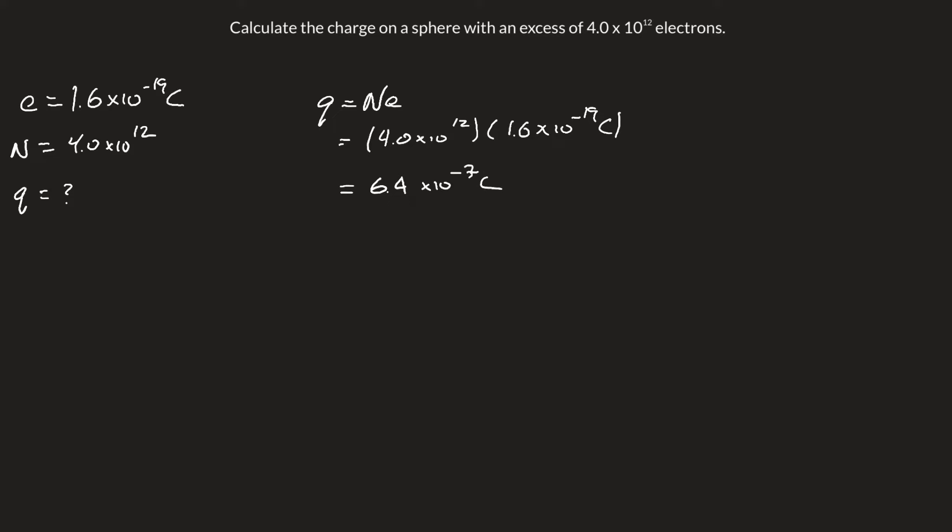One thing we could add here just to make it slightly more accurate is because we're dealing with electrons, and we know, particularly from chemistry class, that electrons have a negative charge. So if we just keep in mind that there's a negative charge here, overall charge is negative 6.4 times 10 to the negative 7 coulombs.